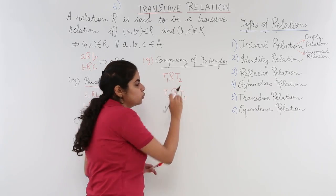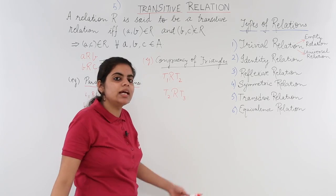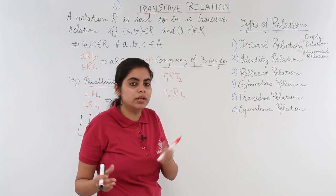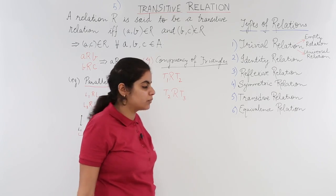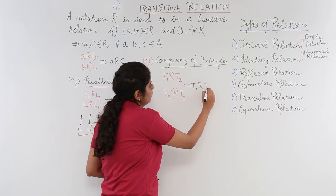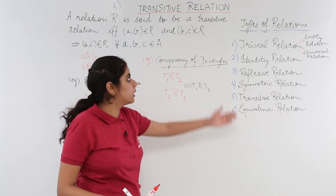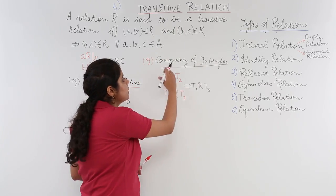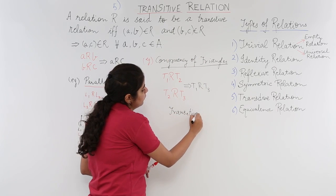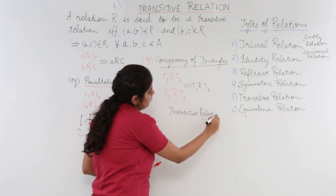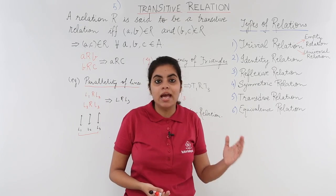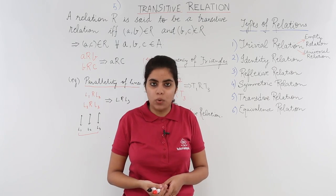Now from these two statements, can I infer one thing? If the first and second triangles are congruent, and the second and third triangles are congruent, then the first and third would also be congruent. So from these two, I imply T1 is related to T3. Since this follows from the above definition, I can say that congruency of triangles is also an example of a transitive relation. By now we have studied what a transitive relation is and seen examples of it.